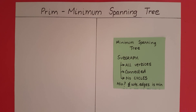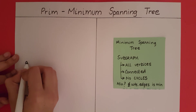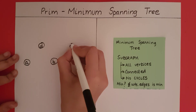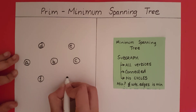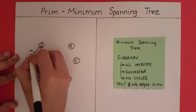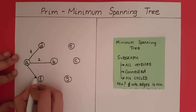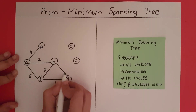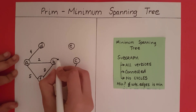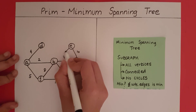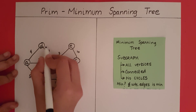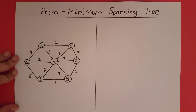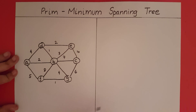With this in mind, let's take a look at an example. This is going to be the graph that we want to construct the minimum spanning tree for. Let's see what Prim's algorithm is going to do.